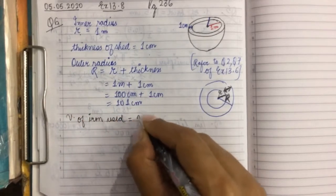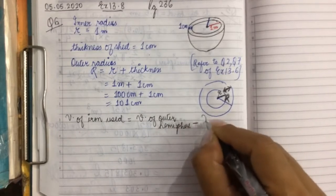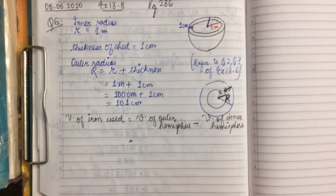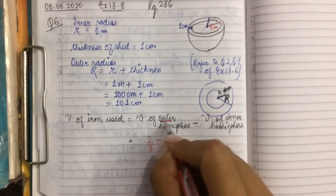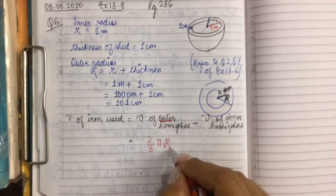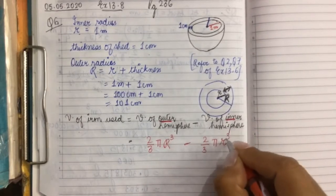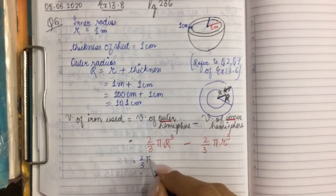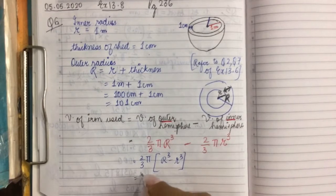Now to find the volume of iron used: volume of iron = volume of outer hemisphere minus volume of inner hemisphere. For a hemisphere the formula is (2/3)πr³. Taking the common factor, this becomes (2/3)π(R³ − r³). Substituting the values gives (2/3)π(101³ − 100³).